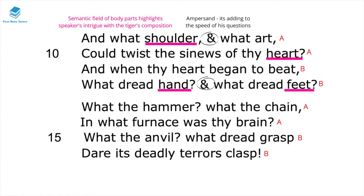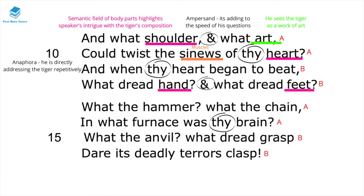Ampersands are used here, adding to the speed of the speaker's questions. The reference to 'what art' shows that the speaker sees the tiger as an exquisite work of art. He repeats 'thy,' meaning 'your,' and this anaphoric reference shows that he's directly addressing the tiger repetitively.